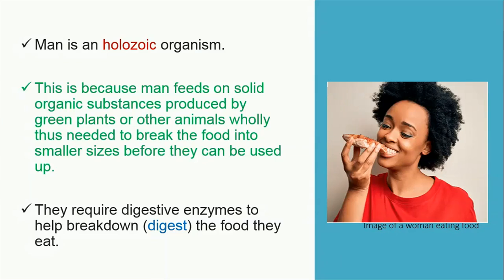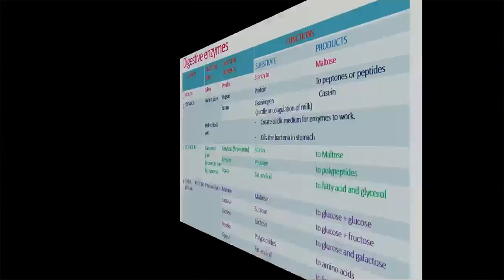Man is a holozoic organism. This is because man feeds on solid organic substances produced by green plants — feeding on plants and other animals, eating them whole in large sizes. Thus, man needs to break food into smaller sizes before it can be used, meaning the food must first be digested. They require digestive enzymes to help break down the food they eat.